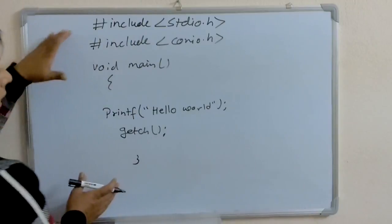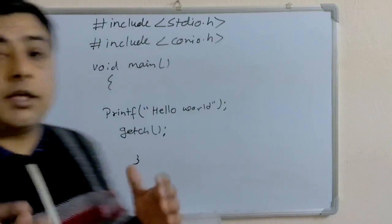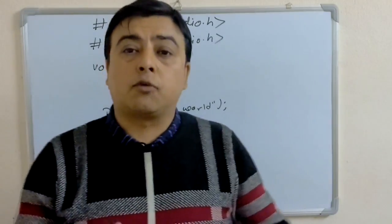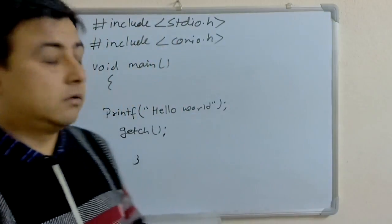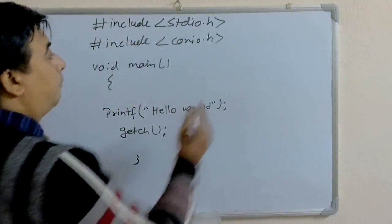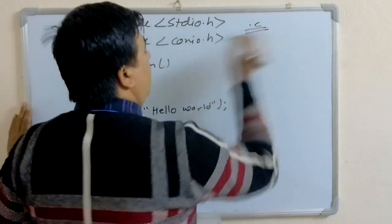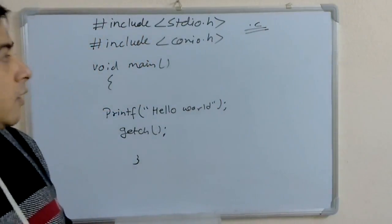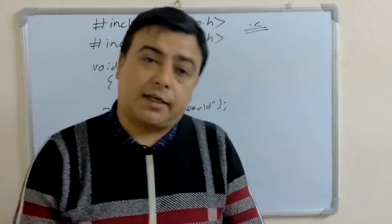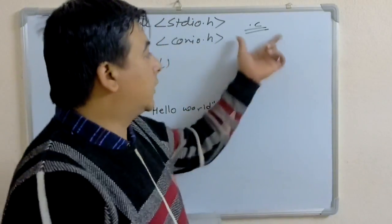After writing this program in any C editor, we have to save this program with the extension dot c. Because the C program extension is dot c.